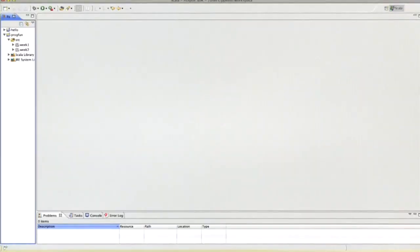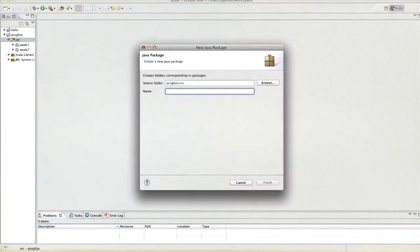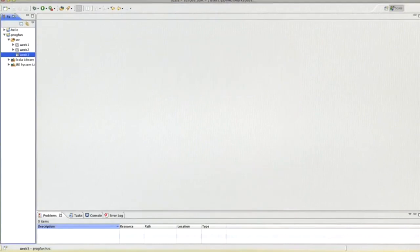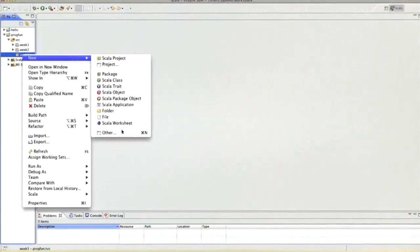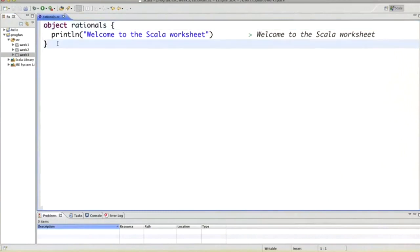Let's try this out in a worksheet. So I will make a new package for week three and I'll create a new worksheet in that package, call it rationals. One thing I am going to do after the first object, which will serve as usual as my scratchpad to try things out, is define my class of rationals. So I say Rational and I have the two ints as you've seen on the slide. And that's it.